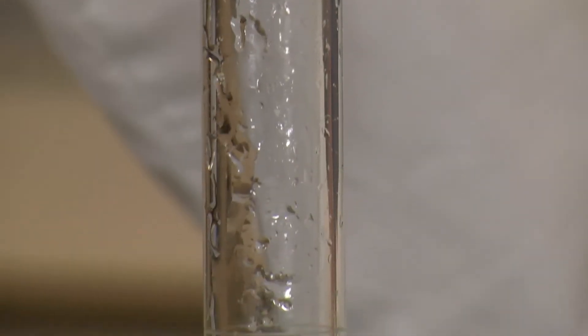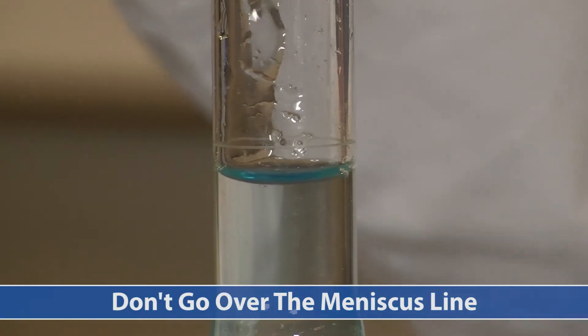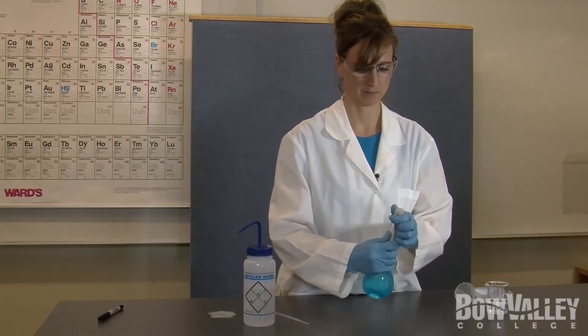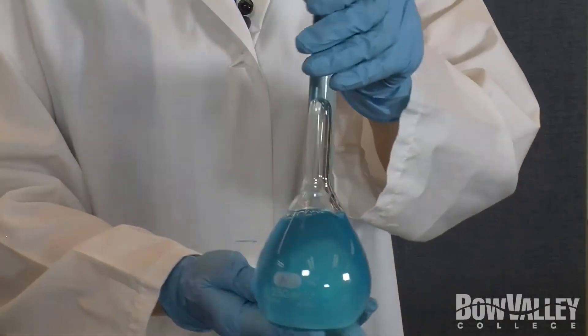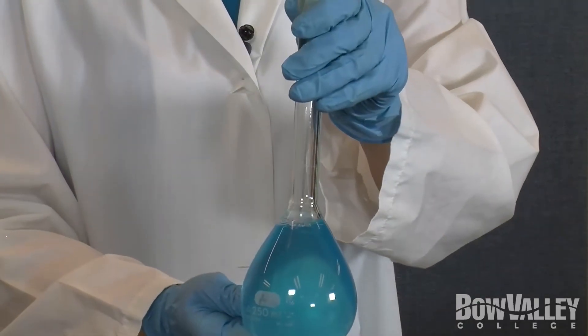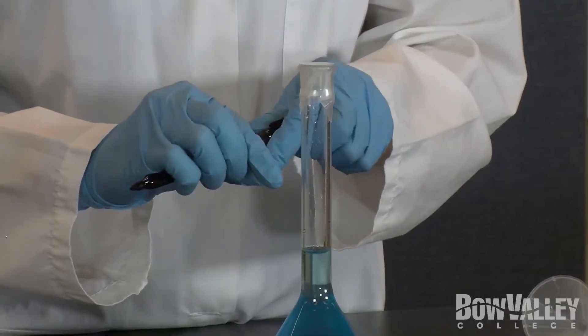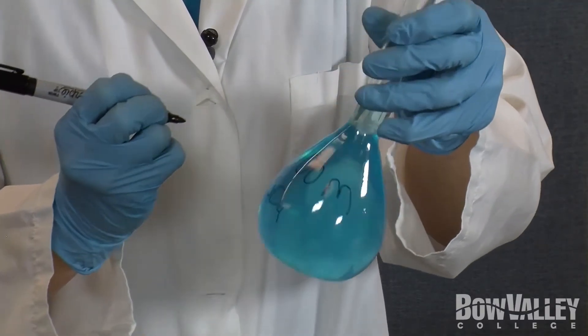On this step be careful, you don't want to go over the meniscus line otherwise you'll have to do it all over again. Seal the flask with a small piece of parafilm. Invert the flask several times to ensure thorough mixing. Now label the flask with the name and concentration of the stock solution. You have now made a stock solution.